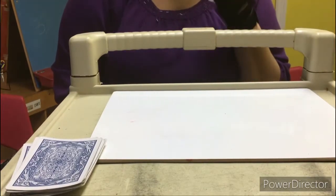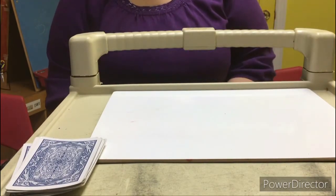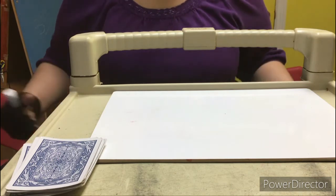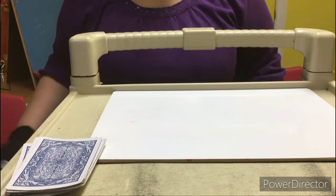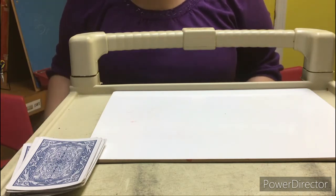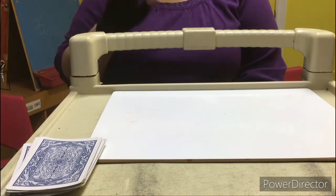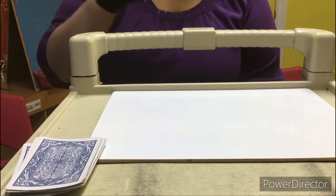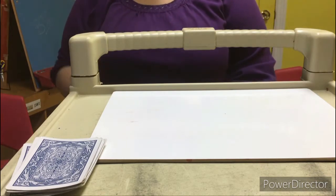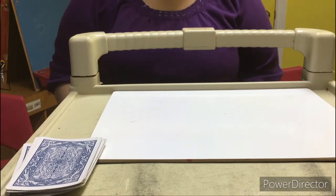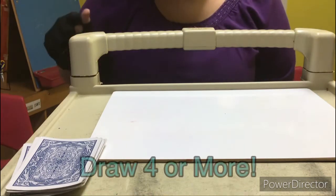All right friends, time for today's small group activity. For this activity you'll just need something to draw with, paper or a dry erase board, and you'll need a few playing cards - you can use Uno, any cards with numbers, maybe about four or five of them. We're going to play Draw Four or More.